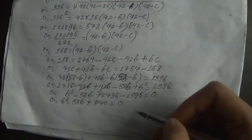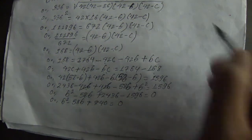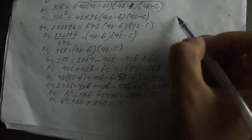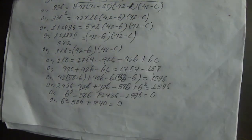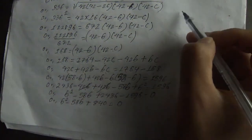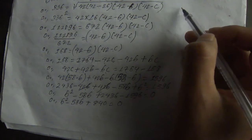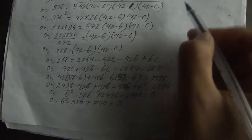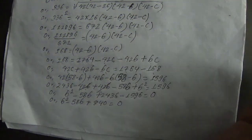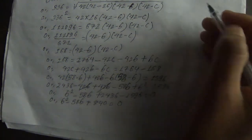We have a quadratic equation. To solve it, we begin by prime factorizing 840 to find the factor pair that adds to 58.